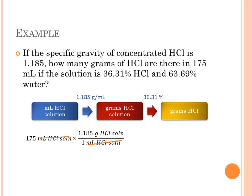The milliliters of the solution cancel, leaving us with grams of HCl solution. And then we can multiply that by a factor that is our percentage, 36.31 grams HCl divided by 100 grams of HCl solution. Where I just assume 100 grams of solution to make the math a little easier.